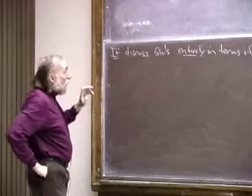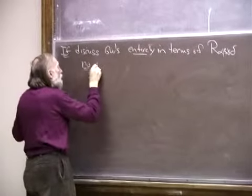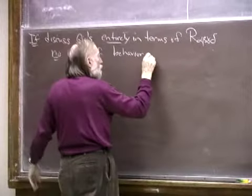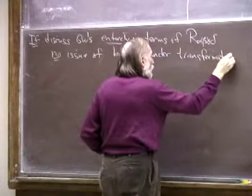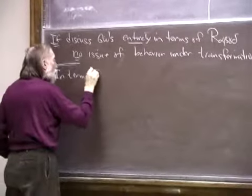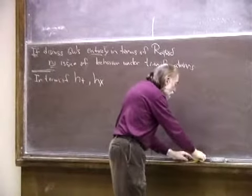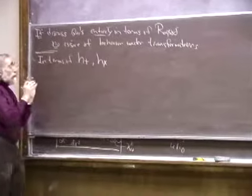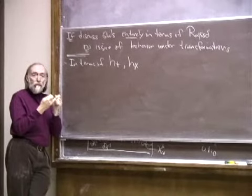The statement is: if we discuss this in terms of the Riemann tensor, there's no issue of transformation behavior — it's all very clear. But we don't want to discuss it in terms of the Riemann tensor; we want to discuss it in terms of H plus and H cross, because they are the ultimate quantities we will generally use in our discussion of gravitational wave detection. A change of reference frames entails two kinds of changes: a rotation of the spatial axes and a Lorentz boost to a frame moving with some other velocity.